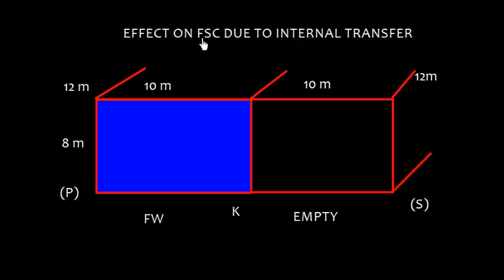Let us discuss the effect on FSC, that is free surface correction, due to internal transfer. Here we have two tanks, one on the port side and another on the starboard side. The port side tank is full of fresh water whereas the starboard side tank is empty. The dimensions of the tanks are 12 meter, 10 meter, and 8 meter.